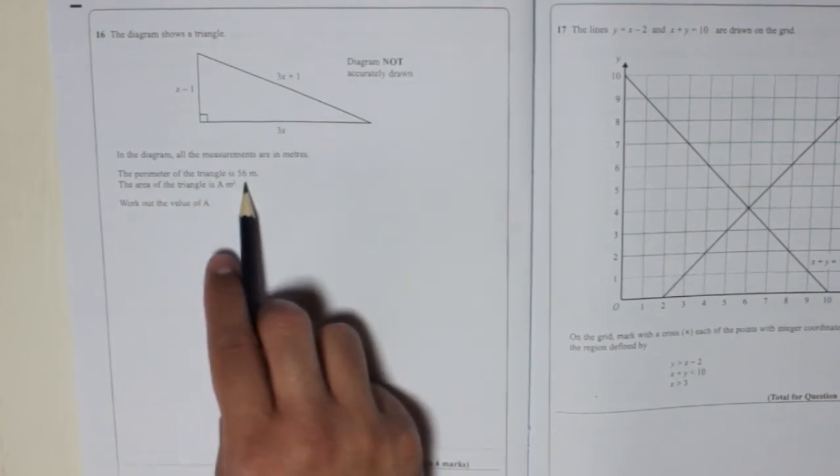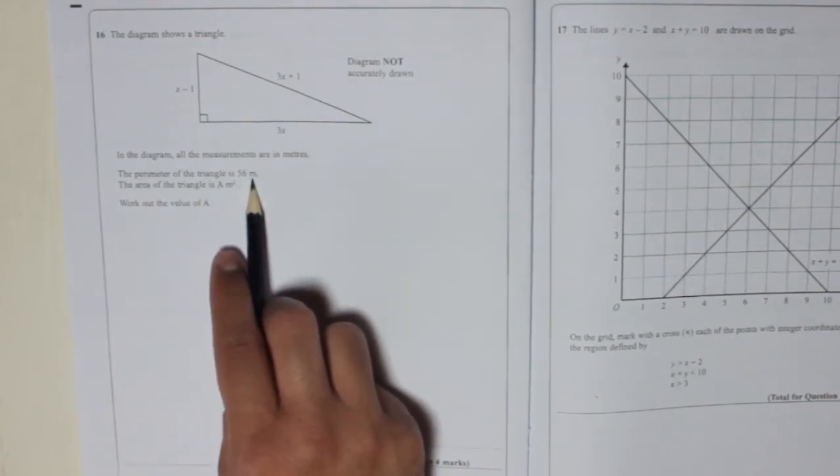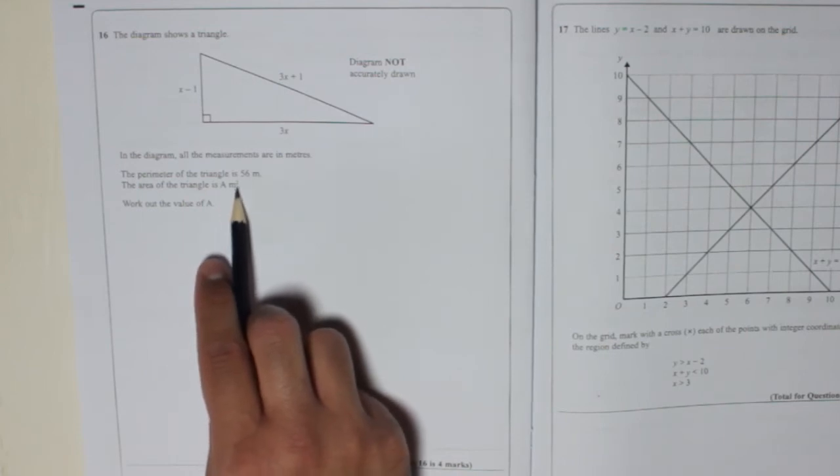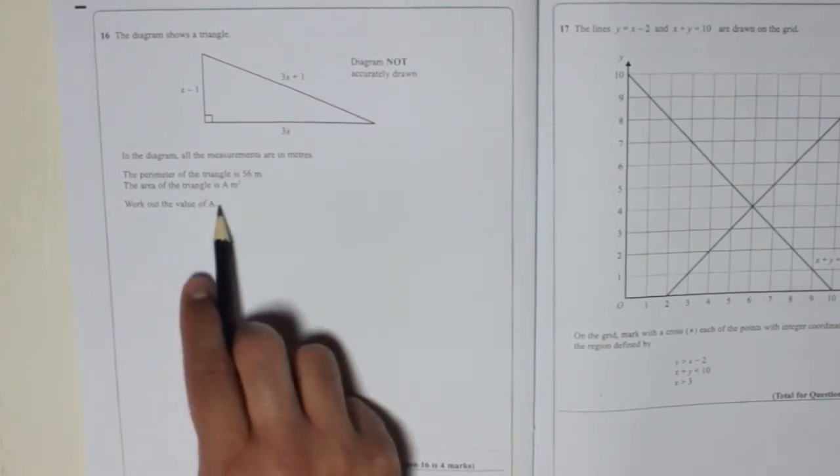The perimeter of the triangle is 56 metres. The area of the triangle is a metres squared. Work out the value of a.